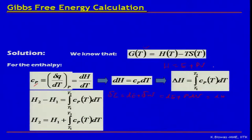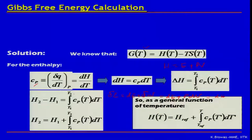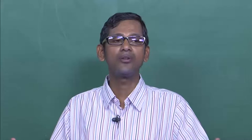We are never interested in calculating the absolute values of thermodynamic functionals like H, S, or G. We are always interested to know the change — the delta values of these functions. So H2 minus H1 equals the integral of Cp dT from T1 to T2. As a general function, H(T) equals H_reference plus the integral of Cp dT from T_reference to T, where H_reference is the reference enthalpy at a standard temperature and pressure — normally 25°C and 1 atmospheric pressure.